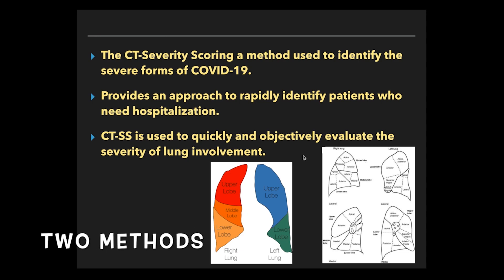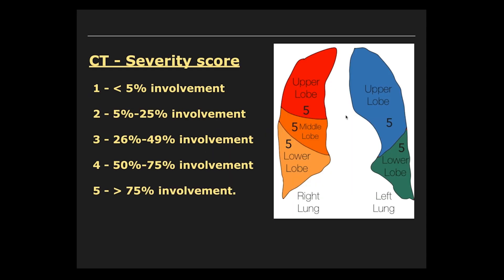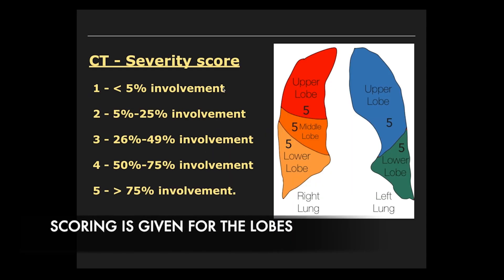There are two methods to calculate CT-CVRT scoring: one is the lobe-based method, and one is the segmental region method. In the lobe-based method, the scoring is given for each lobe based on the level of parenchymal involvement. In the segmental region method, we give scoring to the segments based on the level of parenchymal involvement. This is the CT-CVRT score based on the lobe-based method.